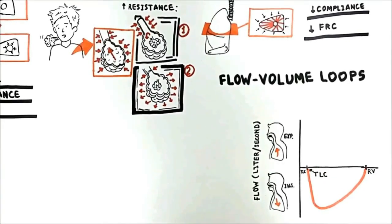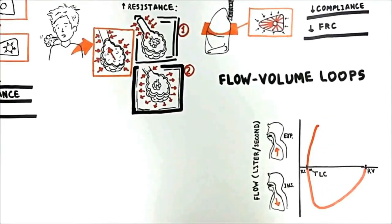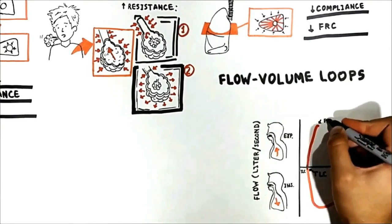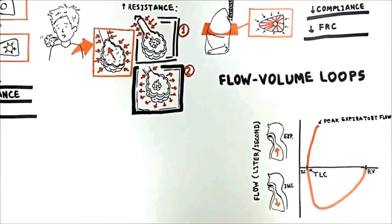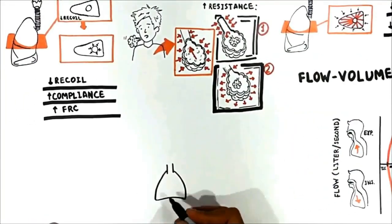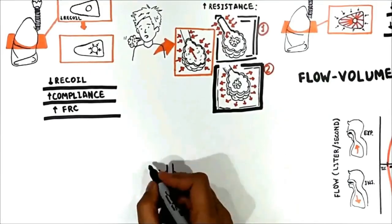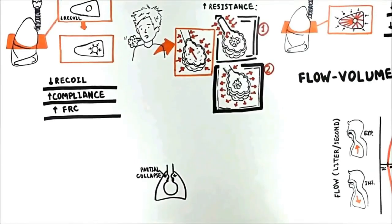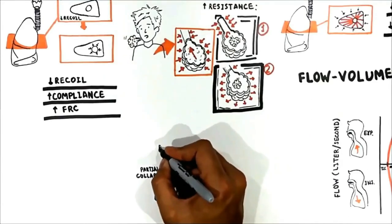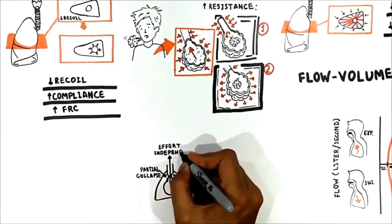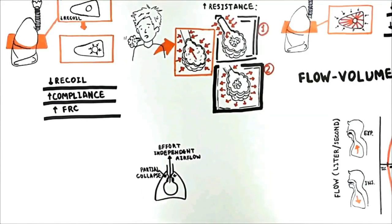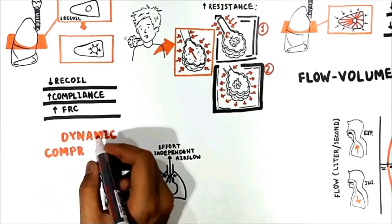You ask a person to breathe in as deep as possible to reach total lung capacity, then blow out as hard and as fast as possible. Flow is very high at the beginning of expiration — this point is called peak expiratory flow. At this point a partial collapse of the larger airways occurs, which increases airway resistance and limits the maximum flow rate. Once partial collapse has occurred, airflow becomes effort-independent — no matter how hard you try to expire, you cannot increase flow because the large airways are partially collapsed. This partial collapse is called dynamic compression of the airways, making the test very reproducible.